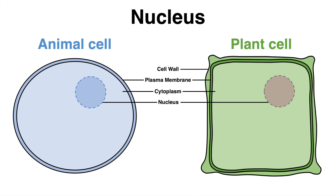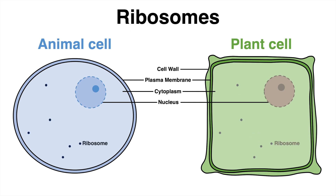Within the nucleus, important processes take place: replication to duplicate DNA and transcription to generate RNA. There is another structure located inside the nucleus. The nucleolus is made of proteins, RNA, and DNA, and its function is the production and assembly of the ribosomes.